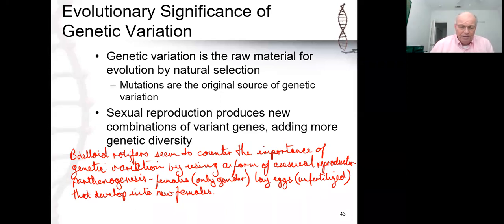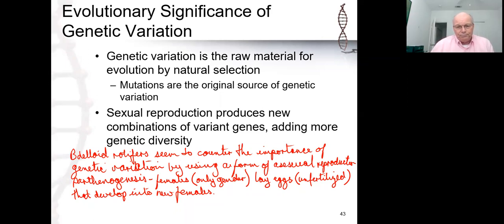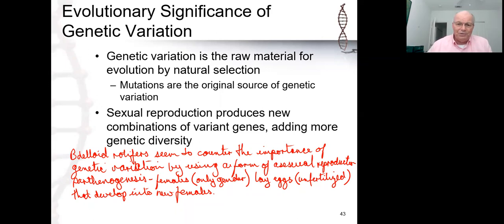The question becomes where that genetic variation comes from. The argument was mutation only — that could be the only source. For a long time, that was the accepted understanding. But we now know that the genetic variation is also a product of the way their chromosomes behave — they are capable of a lot more crossing over and mixing and matching, which creates new chromosomes and the possibility of some genetic variation.